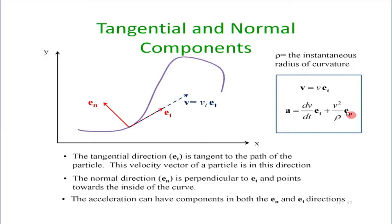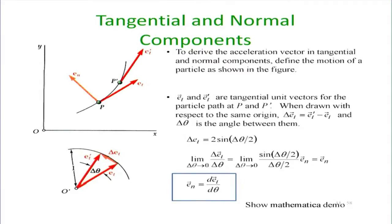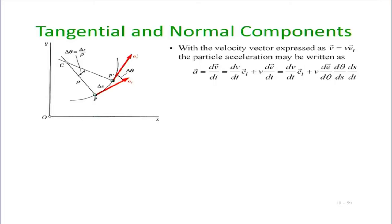The derivation is not difficult but requires visualization — refer to the textbook for details. The result is that acceleration = (dv/dt)·e_t + (v²/ρ)·e_n, where ρ is the radius of curvature. The radius of curvature is defined as the radius of a circle that best fits the local curve at that point. When the curve is flat, ρ is large; when the curve is sharp, ρ is small.